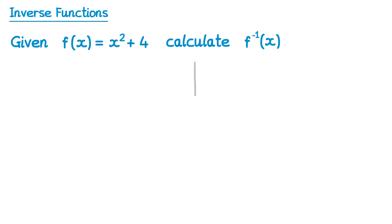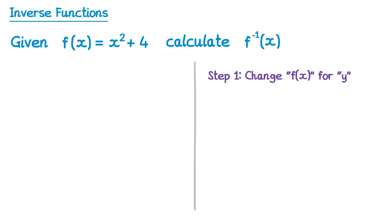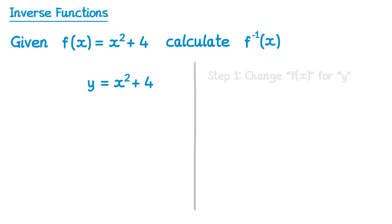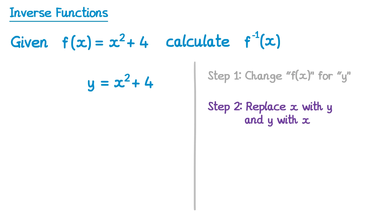Now let's try another example with the same steps. Replace f(x) with y, so it's y equals. Step 2: swap all x's and y's. So instead of y equals, it's x equals, and instead of x squared, it's y squared, then plus 4.